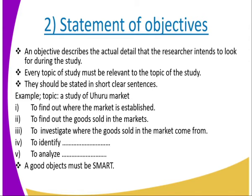Here is an example. The topic of study is the Uhuru market. Objectives would include: to find out where the market is established; to find out where the goods sold in the market come from; to identify; to analyze. You must use words like 'to identify', 'to investigate', 'to find out', or 'to analyze'. A good objective must be SMART — that is, Specific, Measurable, Achievable, Realistic, and Time-bound.